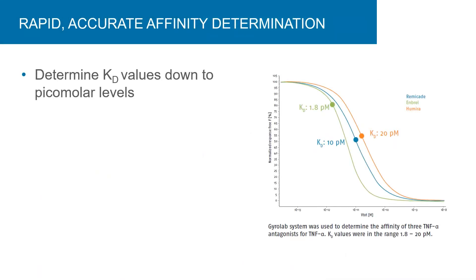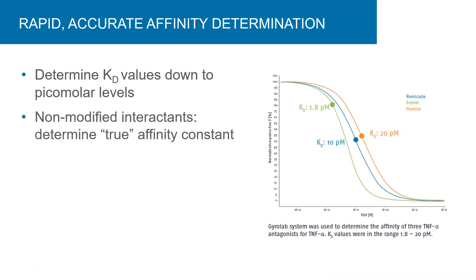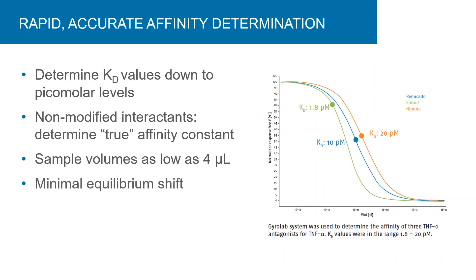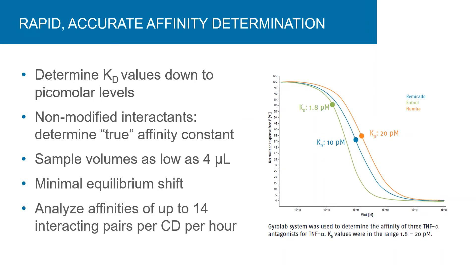Gyrolab affinity immunoassays take about one hour for approximately 100 data points run in parallel. High affinities, meaning picomolar to femtomolar, can be determined. Neither of the interactants are modified and affinity determinations are performed in solution, mimicking the biological system. Affinity constants are as close to the true affinity constant as possible. Sample volumes as low as four microliters are required, and sample flow-through across the column is quick, only capturing the free fixed interactant without disturbing the equilibrium conditions.